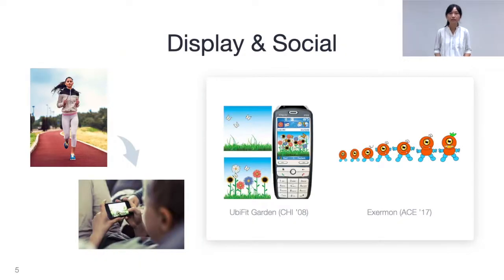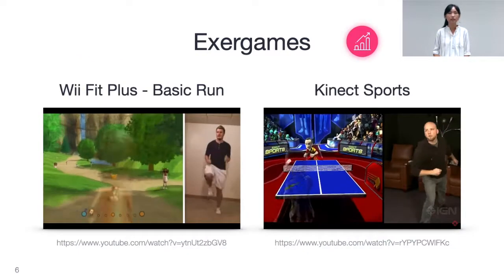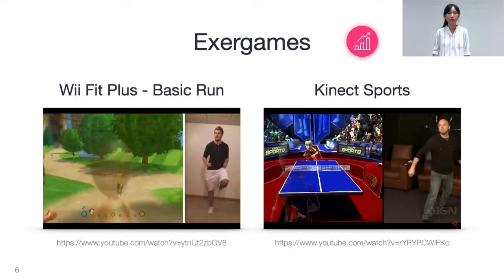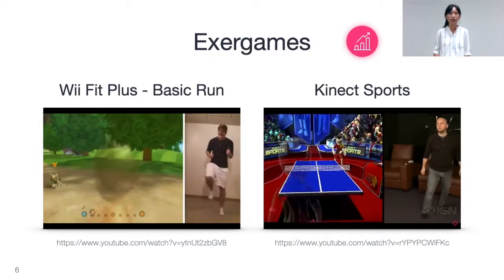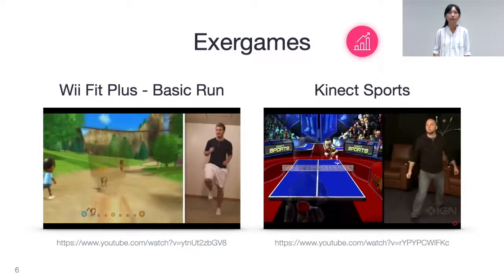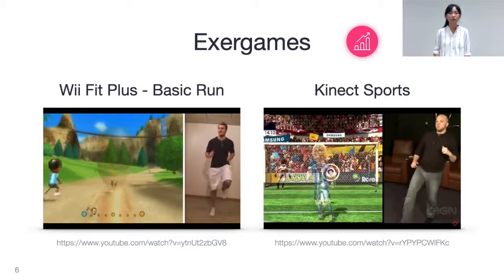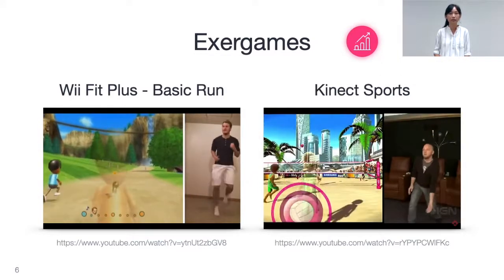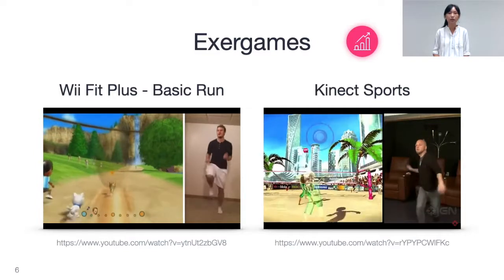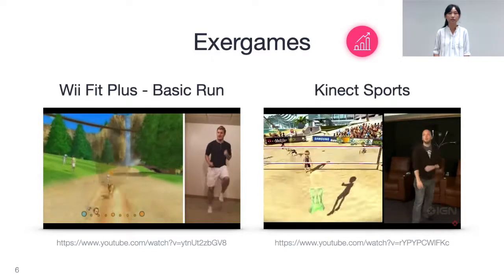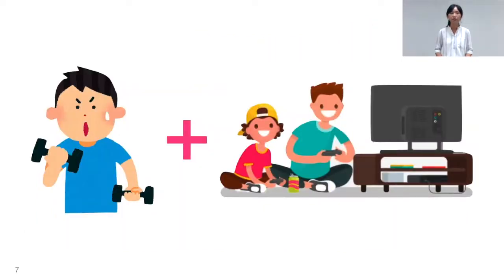One method is combining exercises with display and social feedback, which is given to users after they finish exercises. Exercises can also combine with games to provide instant feedback. There are more and more successful commercial exergames for many exercises, such as Wii and Kinect. But how about strength training?